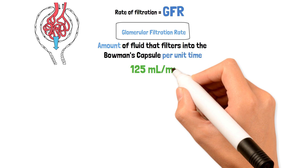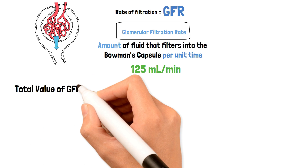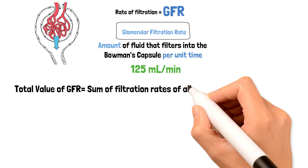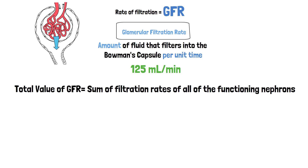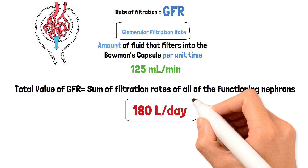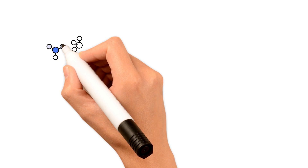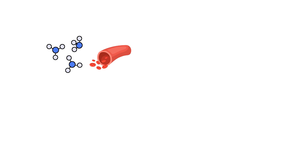The GFR value is around 125 milliliters per minute. This value is very important as it tells us how our kidneys are functioning. Theoretically, the total GFR is equal to the sum of filtration rates of all functioning nephrons, which accounts for 180 liters of fluid per day. When the kidneys are not functioning, they are not filtering, and the GFR will drastically decrease.